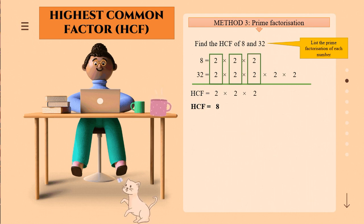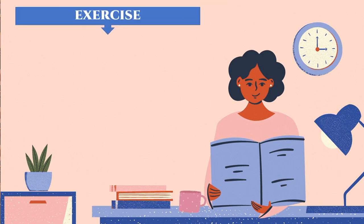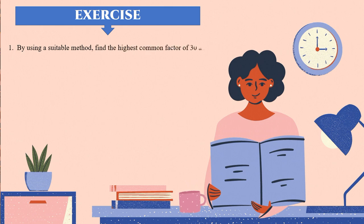This method can also be used to find HCF, but as usual, I suggest you use Method 2 — the repeated division or algorithm. Now let's look at an exercise. By using a suitable method, find the highest common factor of 30 and 72. You can use any method you prefer — listing the factors, algorithm, or prime factorization — but I recommend the algorithm.